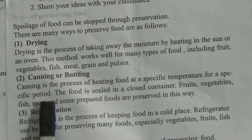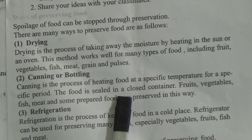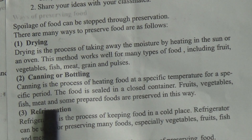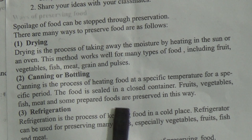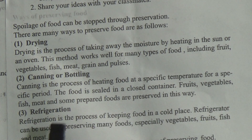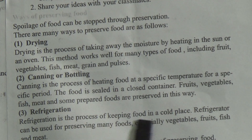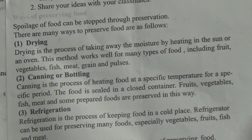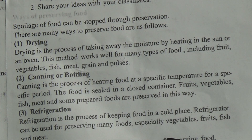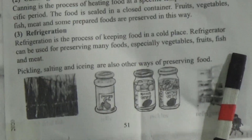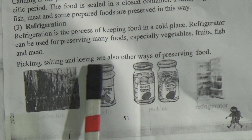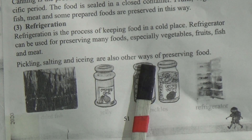The food is sealed in a closed container. Fruits, vegetables, fish, meat, and some prepared foods are preserved in this way. Refrigeration is the process of keeping food in a cold place. A refrigerator can be used for preserving many foods, especially vegetables, fruits, fish, and meat. Pickling, salting, and icing are also other ways of preserving food.